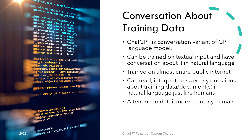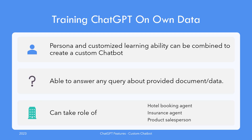Except it's not human, and its attention to detail and information retention far exceeds the ability of any human. ChatGPT also has the persona ability, which allows it to assume a certain role or persona like a school teacher, lawyer, travel agent, poet, etc. Combining the customized learning ability and role persona results in a very powerful, one-of-a-kind chatbot trained on your provided documents and able to answer any question about them in that role.